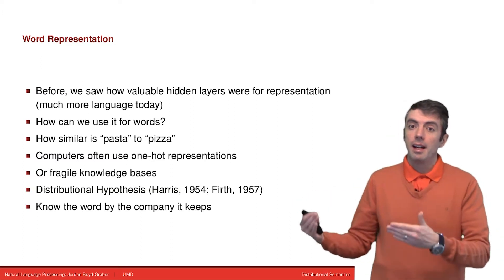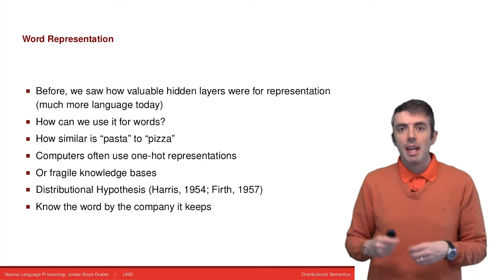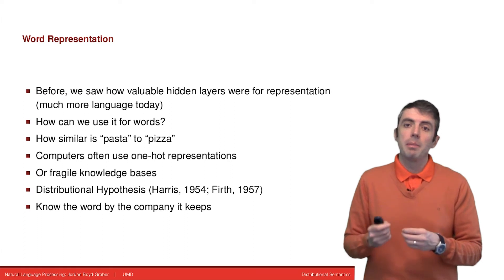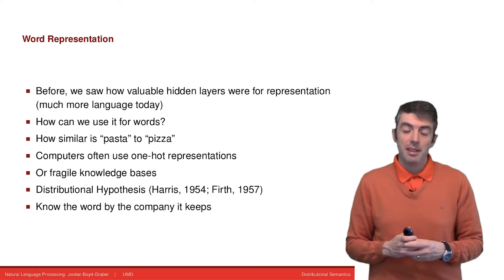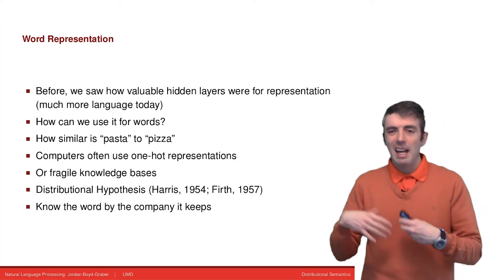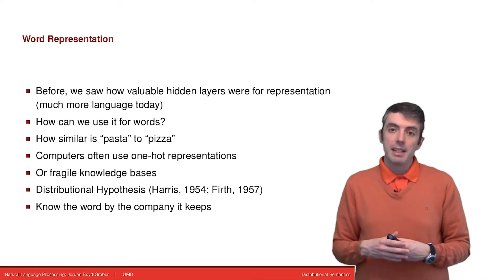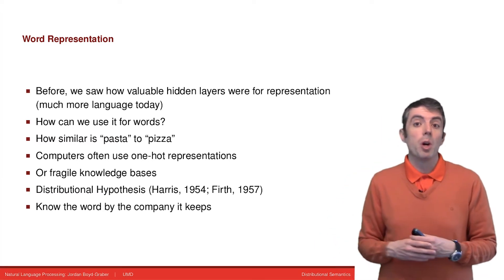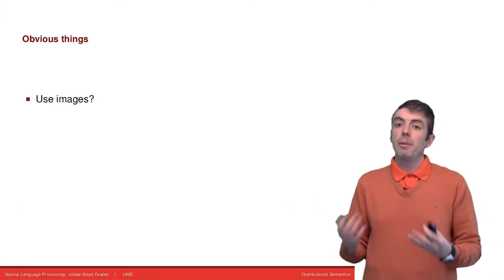Broadly, this kind of method is called distributional semantics. That is, you learn something about the meaning of the word based on the other words that it appears with. This is called the distributional hypothesis from Harris. One way of summarizing this is a famous quote: you know the word by the company it keeps. That is, you know what a word means based on the words that appear next to it.